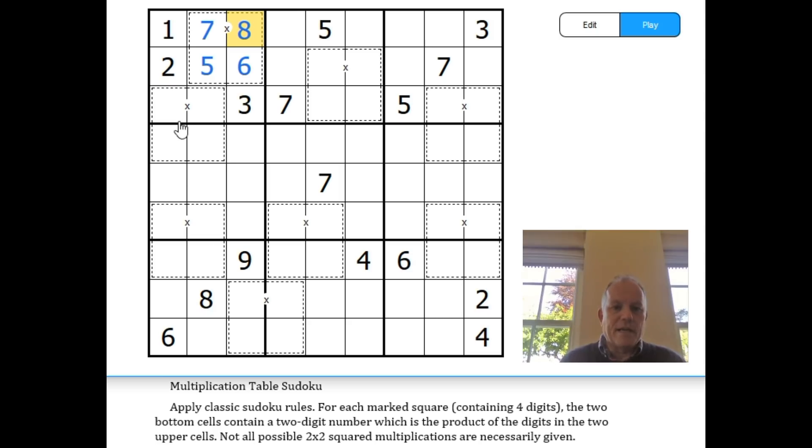This must be seven times eight. We know the order because of the eight down here. These are four and nine in some order, multiplying to give 36. Yes, I can do pencil marks, lovely! Thank you, Sam.